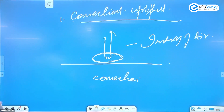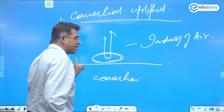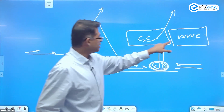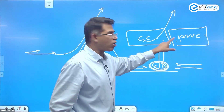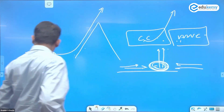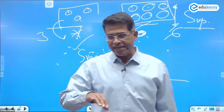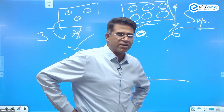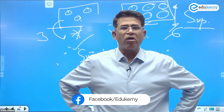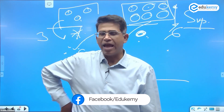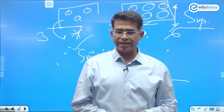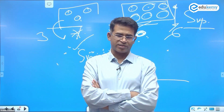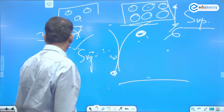To understand convectional rainfall, the concept of stability and instability is applicable. In the frontal case, it is two air masses interacting — that is different. Here, air rises because it is warm compared to the surrounding air. There is a proper mechanism to appreciate how such air rises.